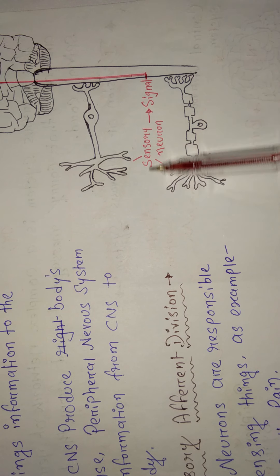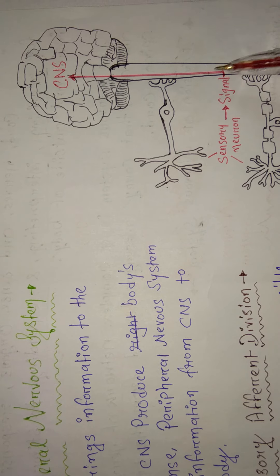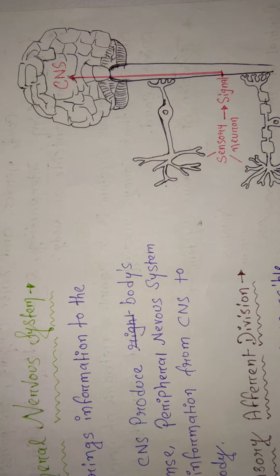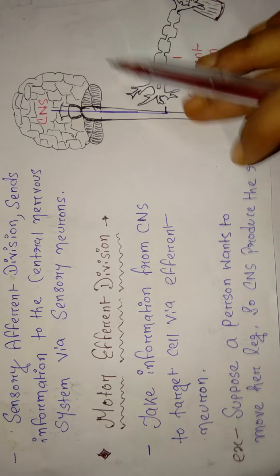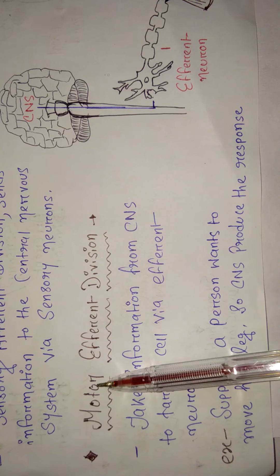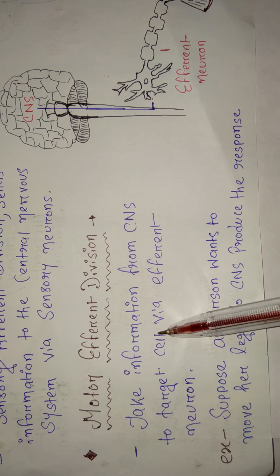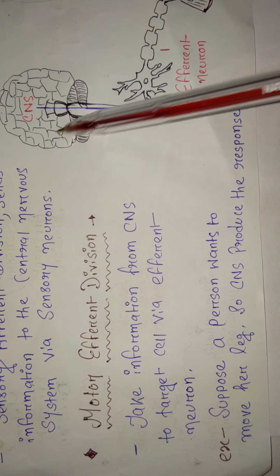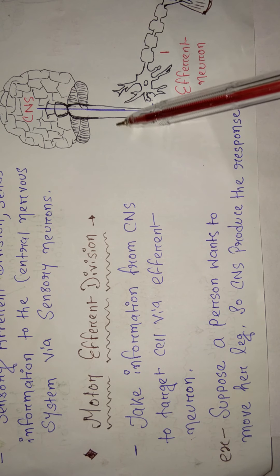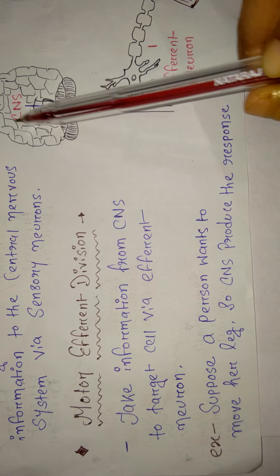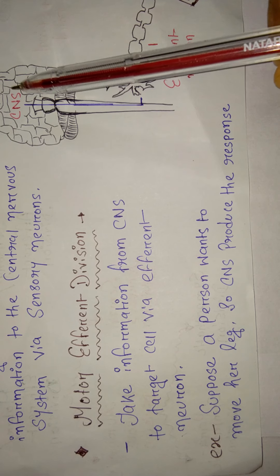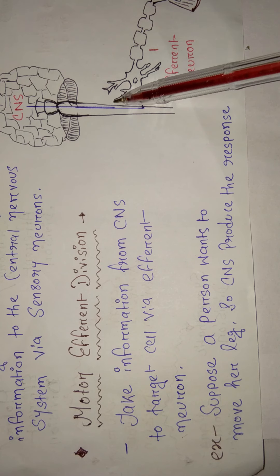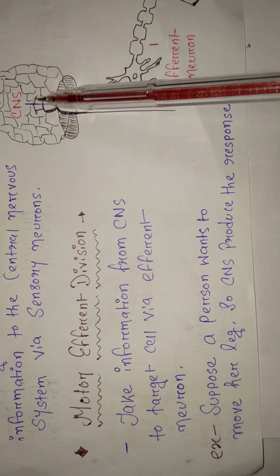Sensory neurons take the signal from the body and carry it to the central nervous system so that the CNS can produce a response. Now the motor neurons — motor means doing some action or movement. After the CNS produces a response, the motor neurons take that response and carry it to the body.